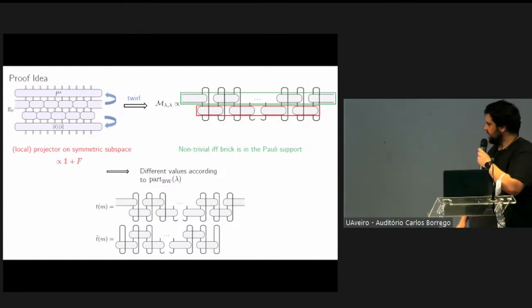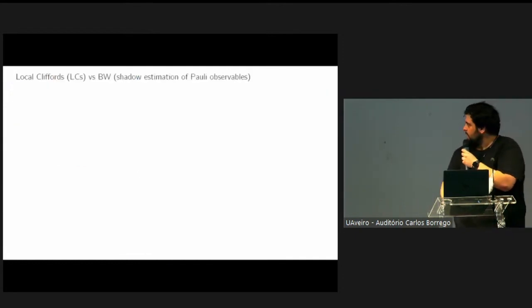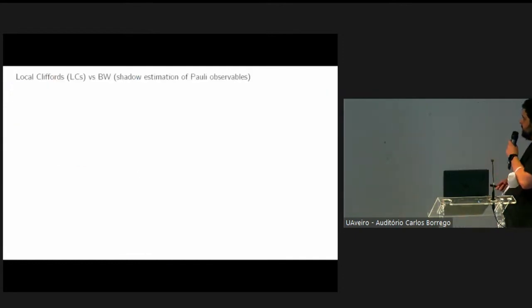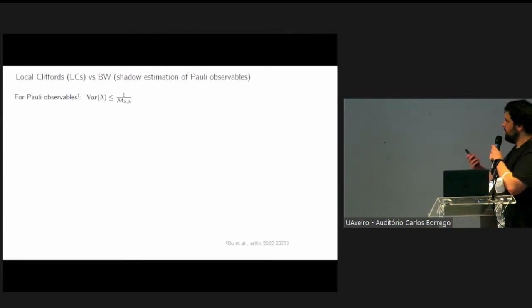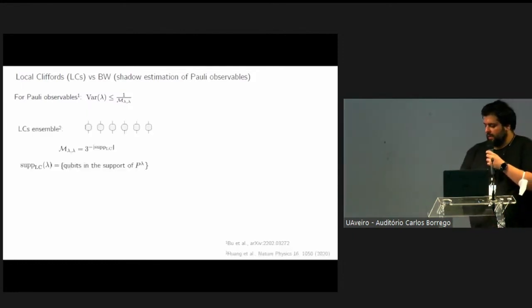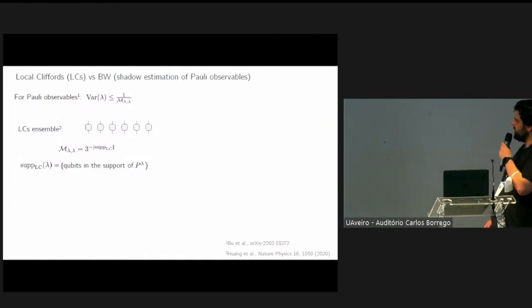As a very last topic, I want to compare the brickwork shadows with the local Clifford ensemble. In particular, I want to consider only Pauli observables, for which we know that the sample complexity, which is controlled by the variance of the estimator, is in this case upper bounded by the inverse measurement channel. In the case of the local Clifford ensemble, this measurement channel is controlled by the number of qubits in the support of the observable we are considering.